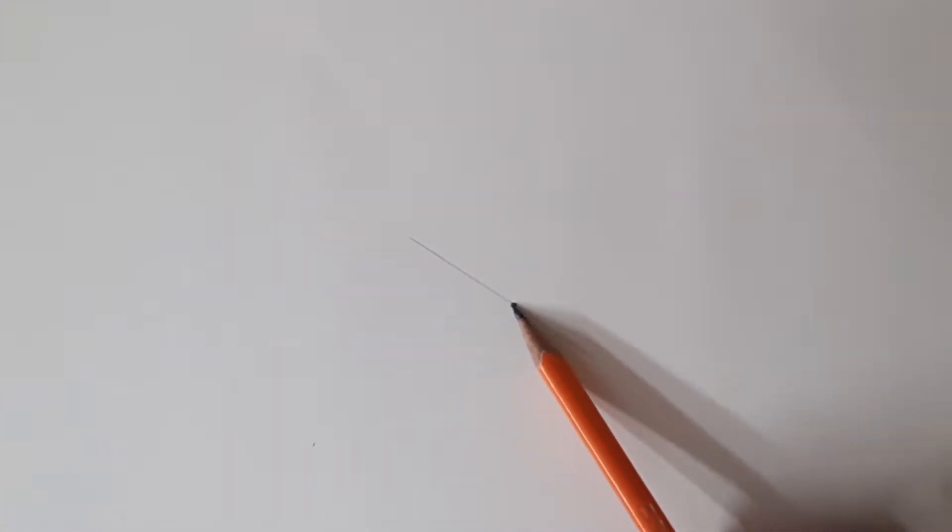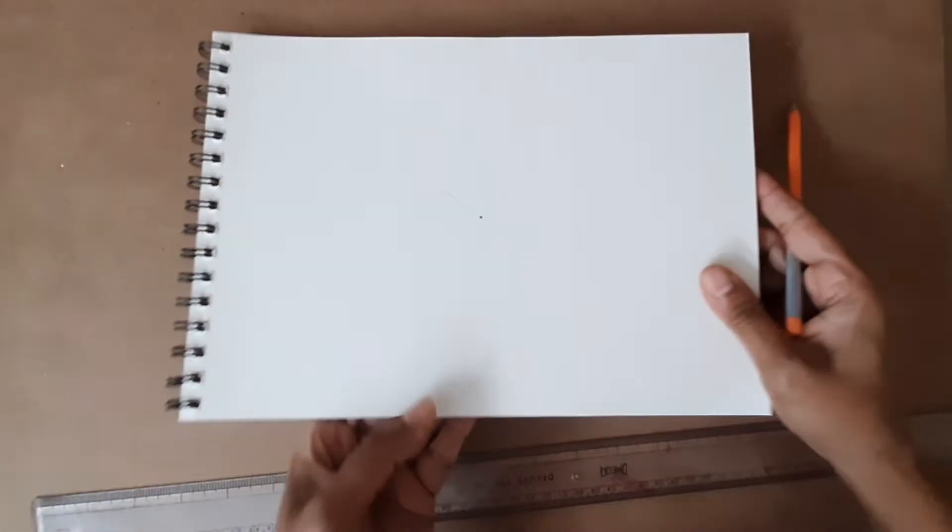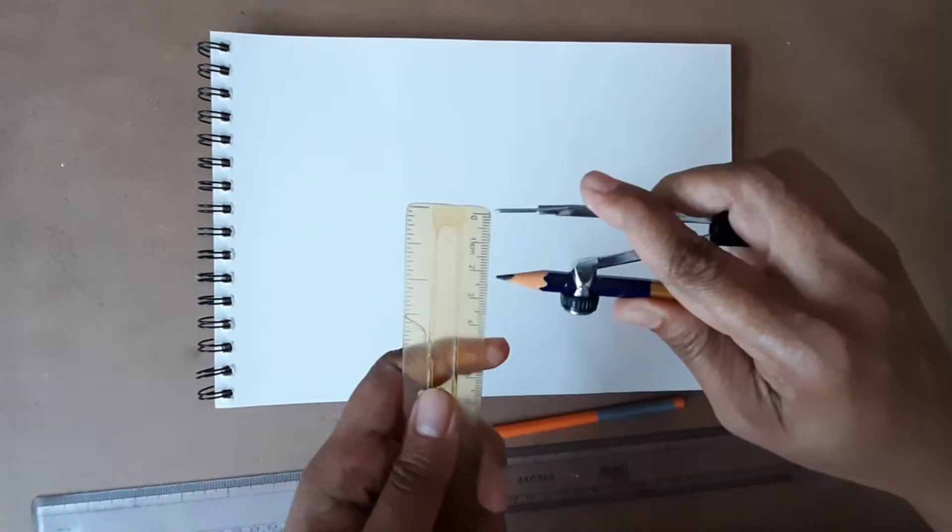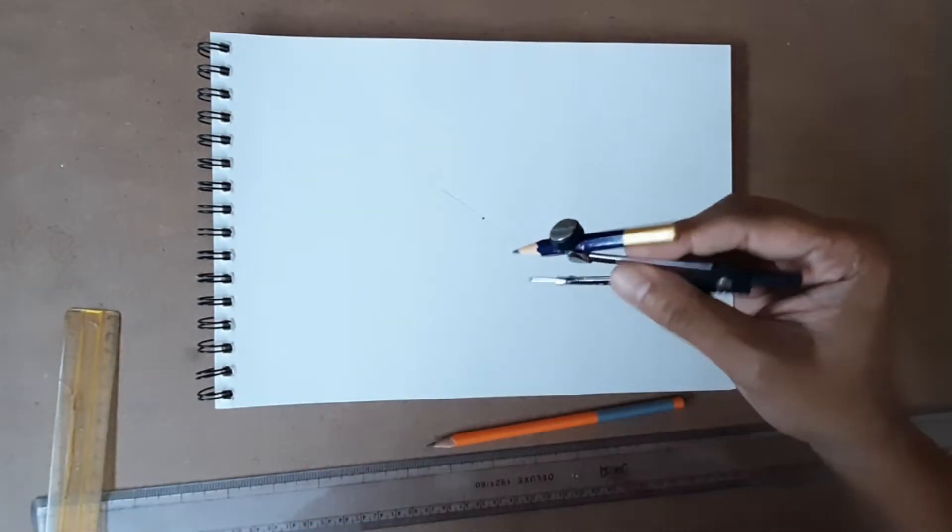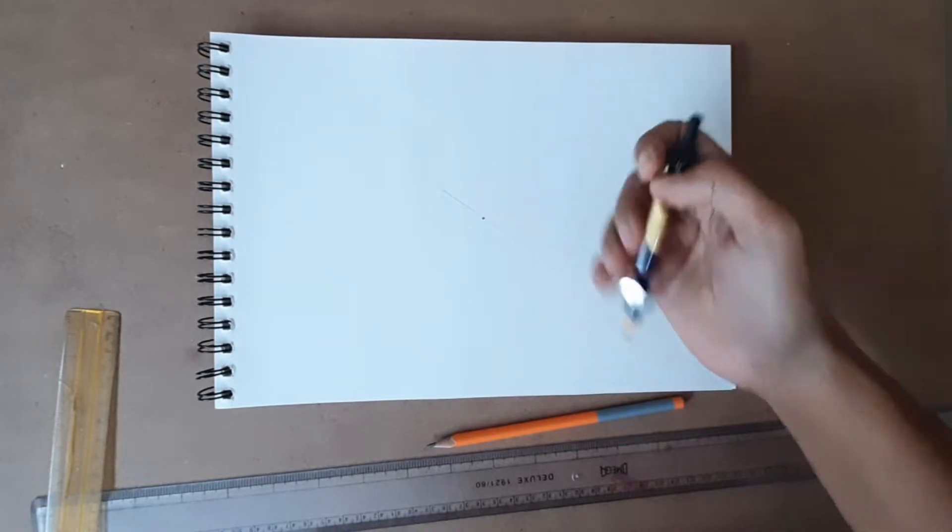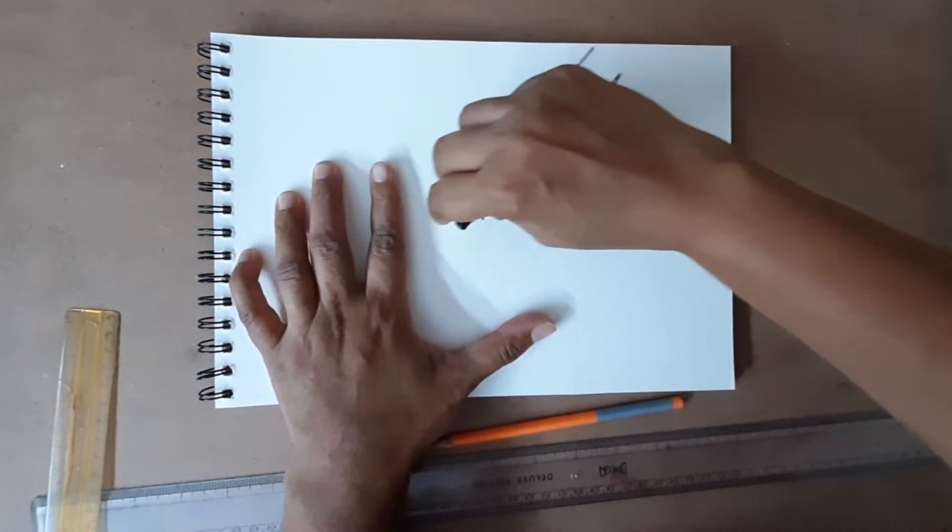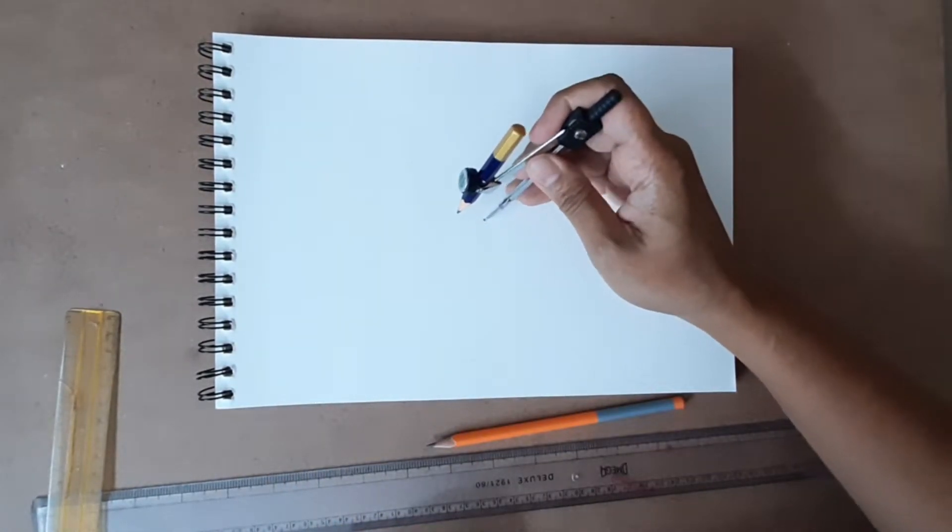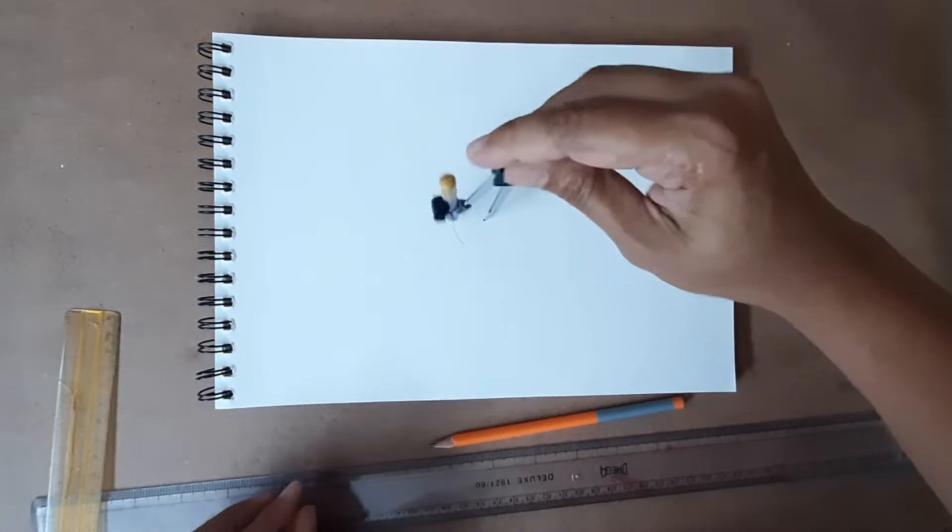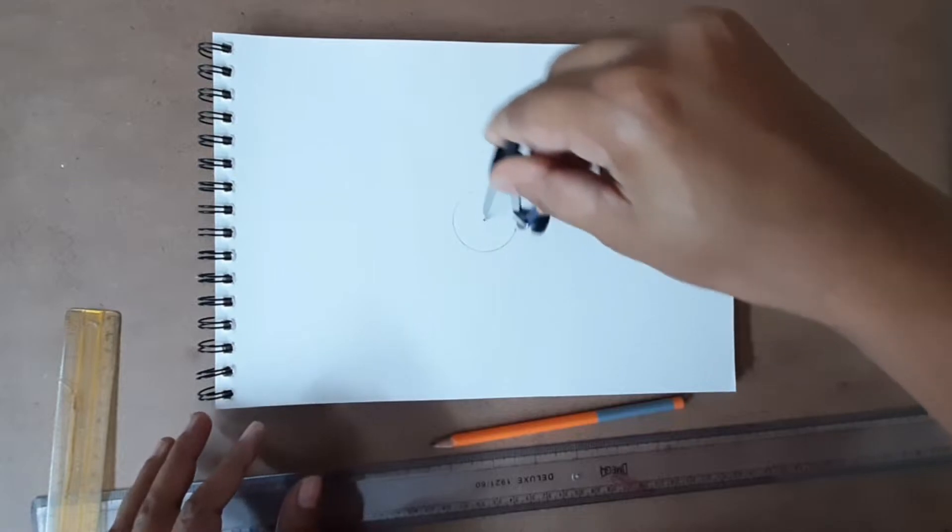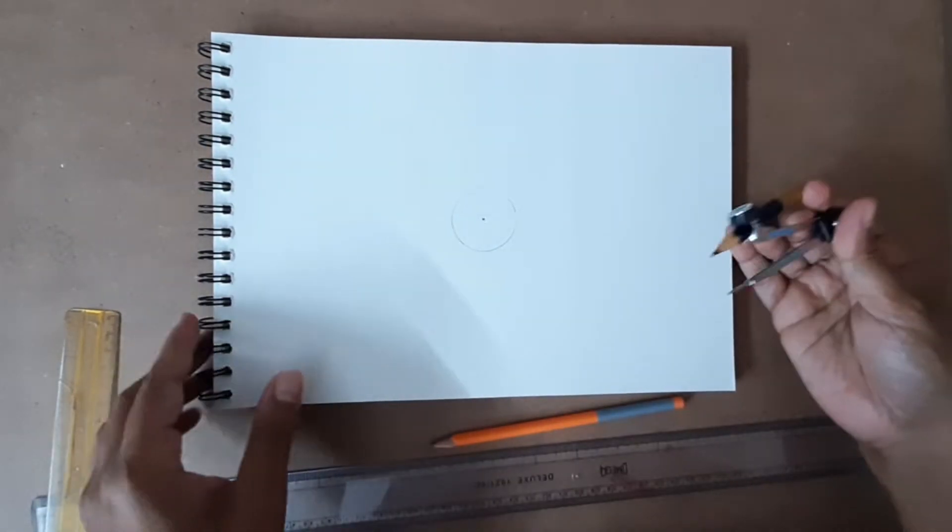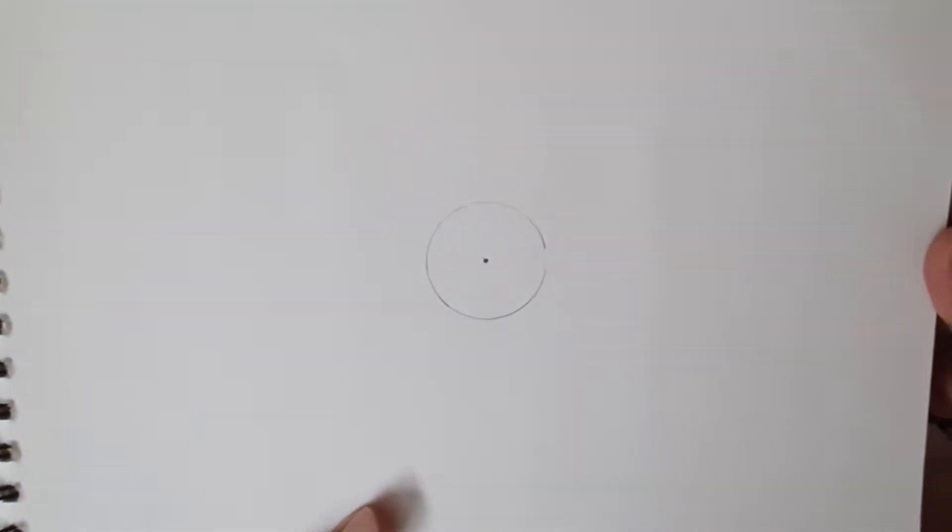From here we can start drawing circles. The first circle will be about two centimeters. I'm just measuring. Maybe we can erase this center line before we start drawing circles so that later we can make clean lines as needed. Now the two centimeter circle is done.